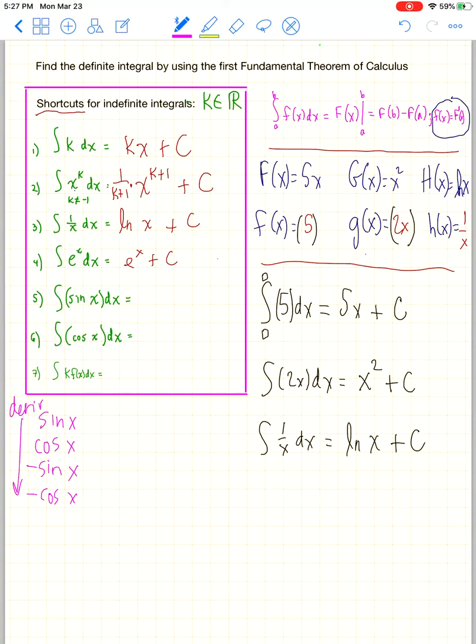The derivative of sine is cosine, the derivative of cosine is negative sine, and the derivative of negative sine is negative cosine. And the derivative of negative cosine, you'd have to go back to the top and say sine.